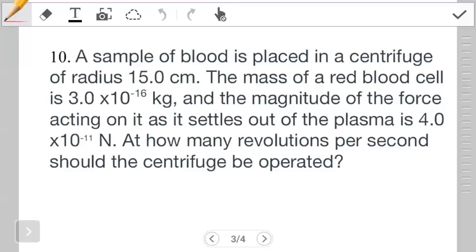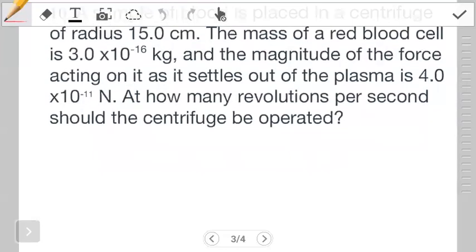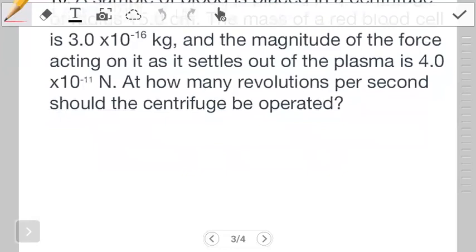We're looking at a red blood cell that has to settle out of the plasma. The centrifuge is rotating and they want us to find the revolutions per second given the force. This question becomes pretty basic if you just understand what you have to do. Since this is a rotation and we're given the radius, what we're looking for is actually given by the centripetal force: Fc = m times the tangential velocity squared over r.